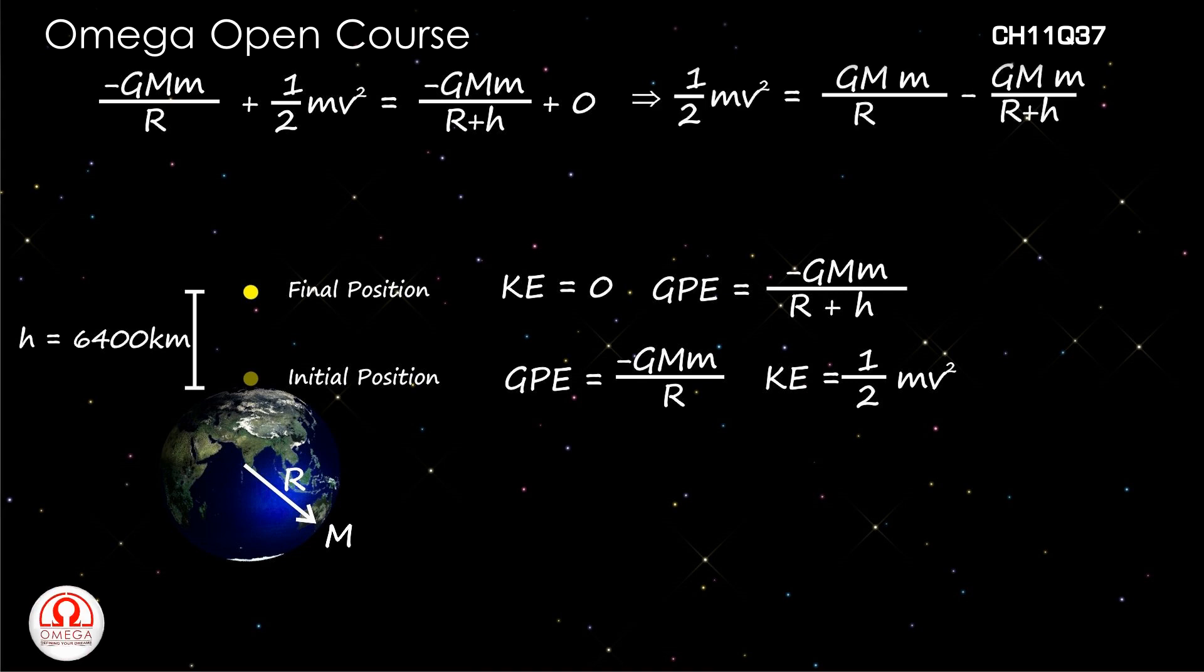Simplifying, we get ½mv² is equal to GMm/R - GMm/(R+h).